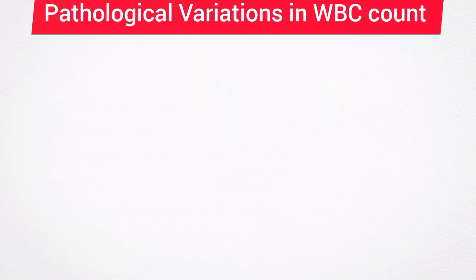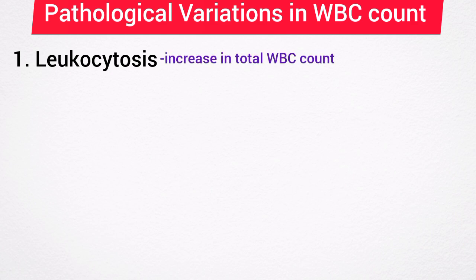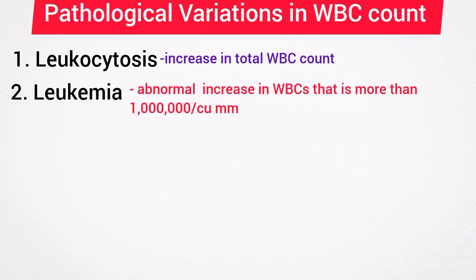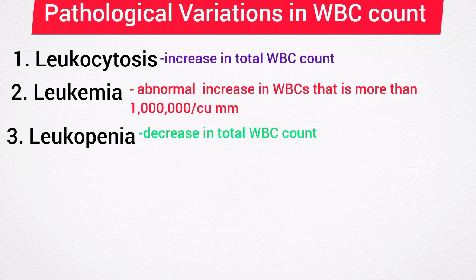Pathological variations in white blood cell count: leukocytosis, the increase in total leukocyte count, occurs in conditions such as infections, allergy, common cold, tuberculosis, and glandular fever. Leukemia is a condition characterized by abnormal and uncontrolled increase in leukocyte count — more than one million per cubic millimeter — also called blood cancer. Leukopenia, the decrease in total white blood cell count, occurs in pathological conditions such as anaphylactic shock, cirrhosis of the liver, disorders of the spleen, pernicious anemia, typhoid and paratyphoid fever, and viral infection.